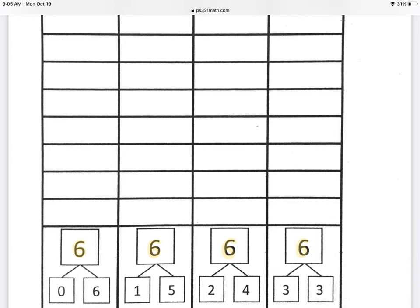So I'm going to shake my discs and I shook three red and three were yellow. So I'm going to find the column that has one part is three and the other part is three. And then I'm going to write three plus three.